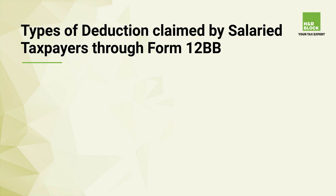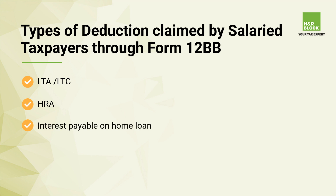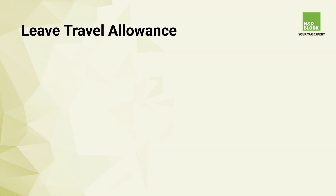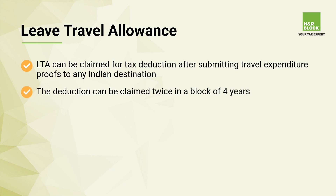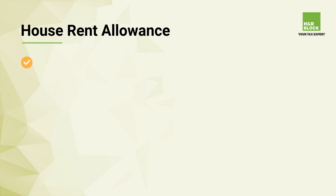What are the types of reductions claimed by a salaried taxpayer with Form 12BB? The various types of reductions can be: LTA or LTC — Leave Travel Allowance or Leave Travel Concession. LTA exemption can be claimed by submitting proof of expenses incurred on travel to any Indian destination. The deduction can be claimed twice in a block of four years.